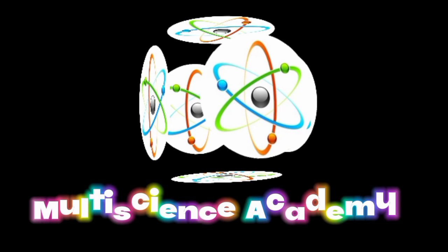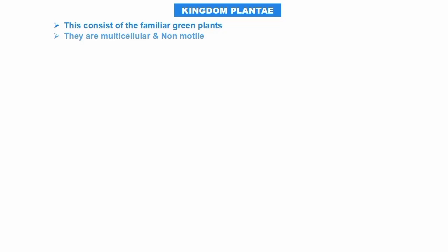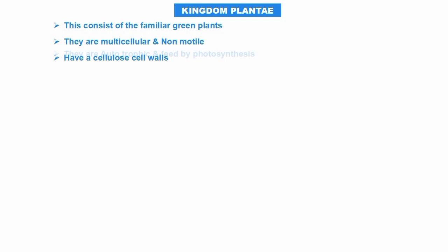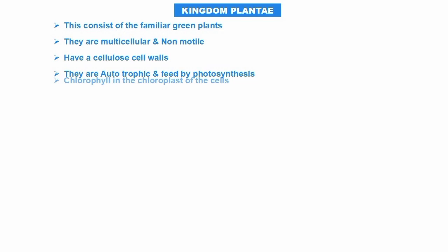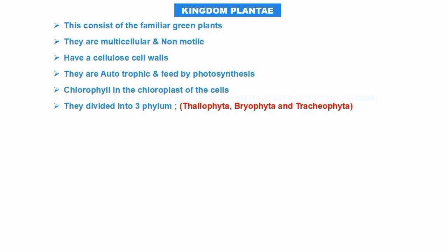Kingdom Plantae consists of a set of family of green plants. They are multicellular and non-motile, have a cell wall, and are autotrophic — they feed by photosynthesis. They can manufacture their own food using chlorophyll found in the cells. They are divided into three phyla: Thallophyta, Bryophyta, and Tracheophyta.